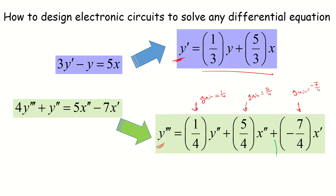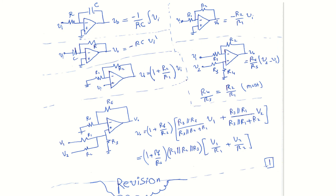Don't forget — we have plus and plus signs here, which means we have a summation of the three terms 1, 2, and 3. Now this is a summary for all the circuits that we covered in this chapter.